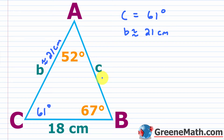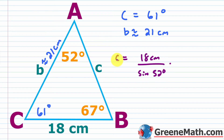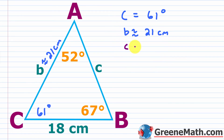For side c, use the same ratio: c equals 18 times sine 61° over sine 52°, which gives about 19.98, so approximately 20 centimeters. So we found c is about 20 centimeters, b is about 21 centimeters, and angle C is 61 degrees.